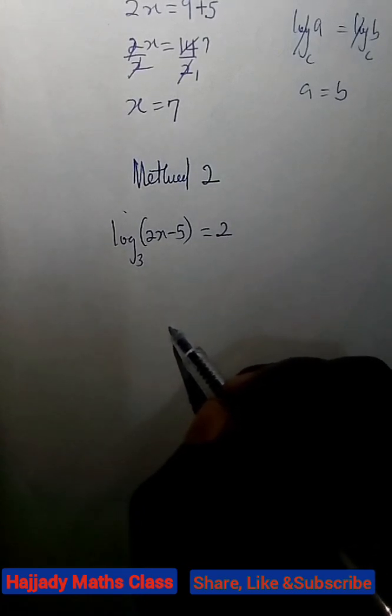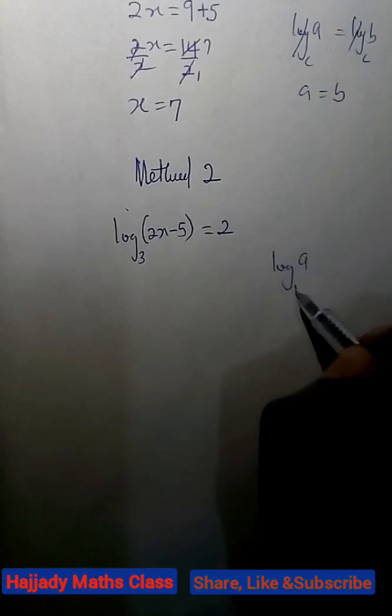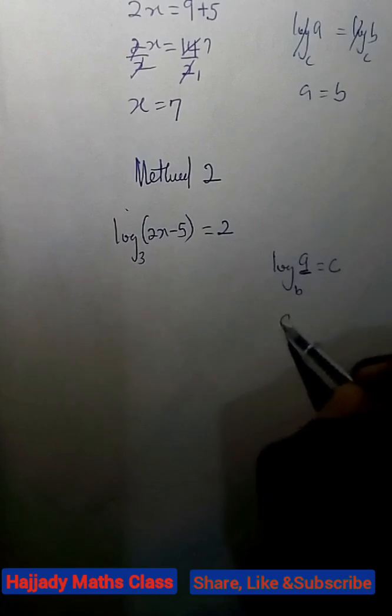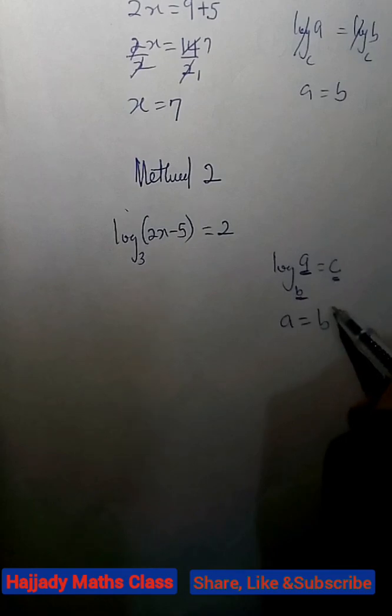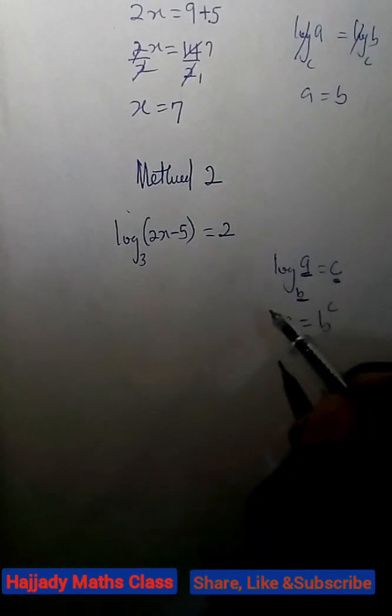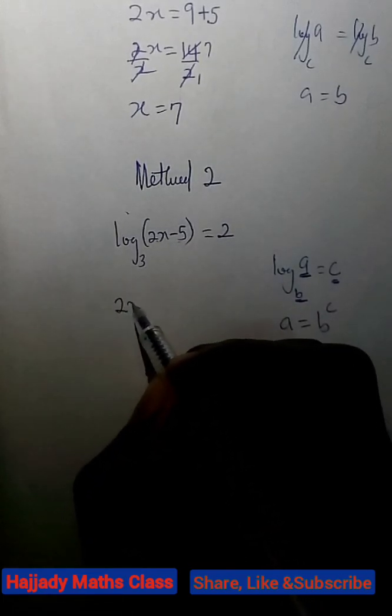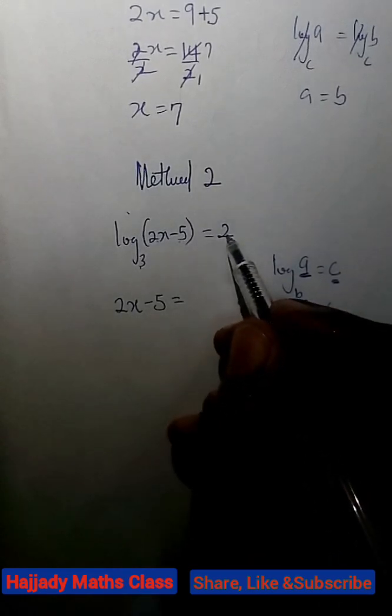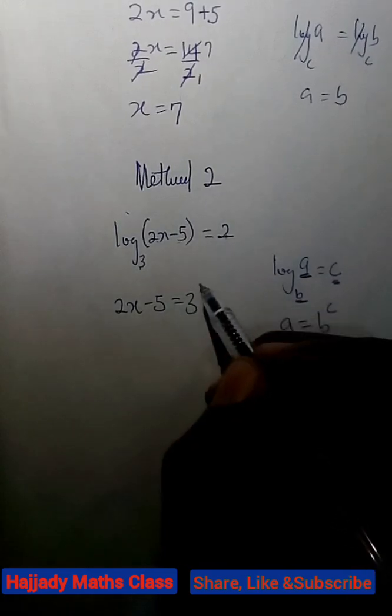From the law of logarithms, I think the last law, it says that when we have log base A of B equals C, we can possibly say that B is equal to A raised to power C. There is another law of logarithms that you need to know. So, applying the same thing now, this will be our B. So, here we have 2x minus 5 equals, this is our A raised to power C, which is 3 raised to power 2.